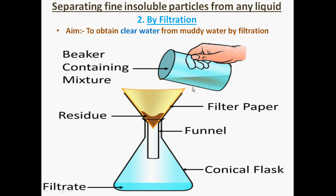The clear water, which may be pure, flows to the bottom of the conical flask, but the residue remains behind because it cannot pass through the finer pores of the filter paper. This is an example of filtration, by which we are separating and clearing the muddy water.